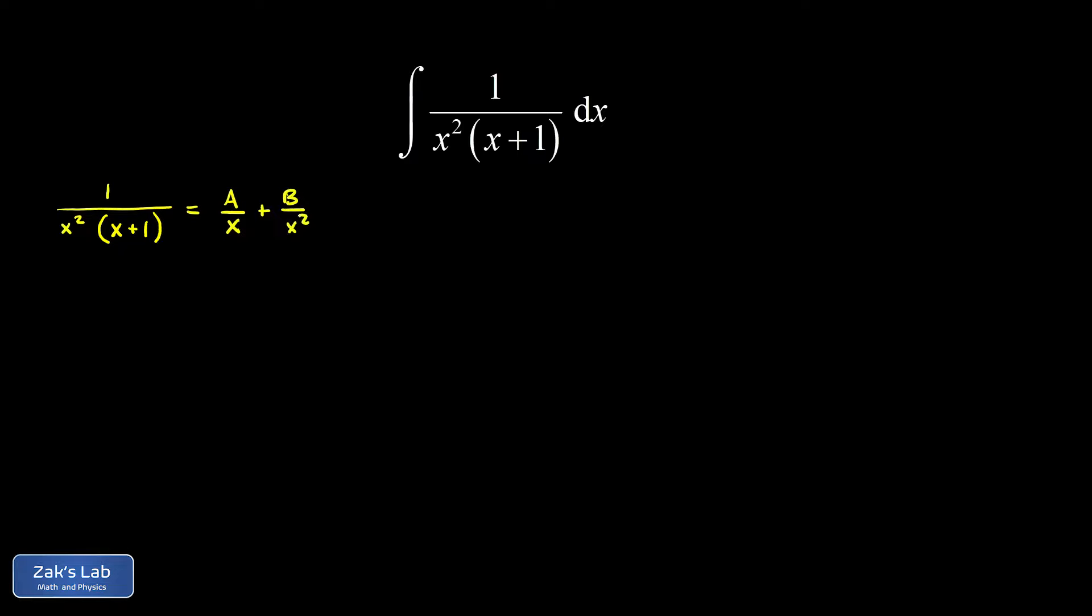It's totally equivalent to interpret the x squared as a single quadratic factor. Then you would propose ax plus b divided by x squared, and that's totally equivalent if you want to take that approach. Finally, we need a c over x plus 1 to handle that linear factor of x plus 1.